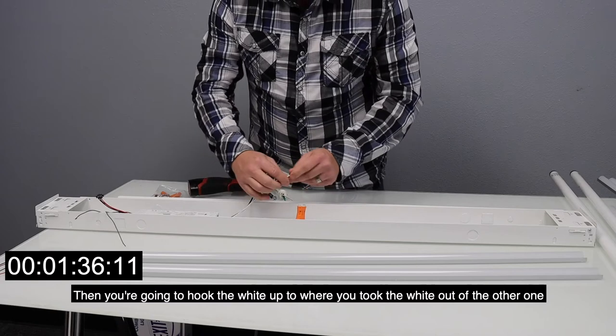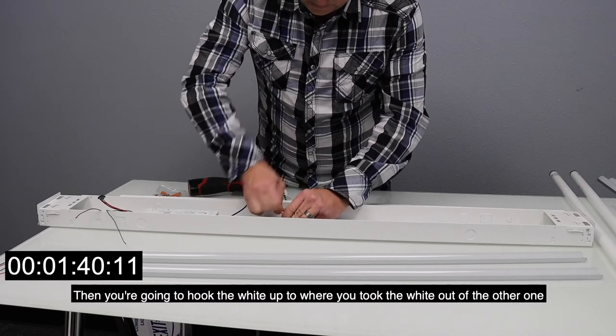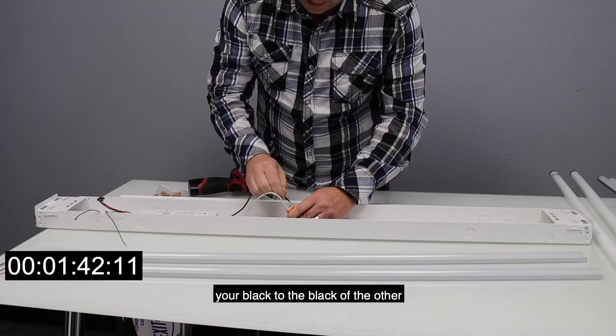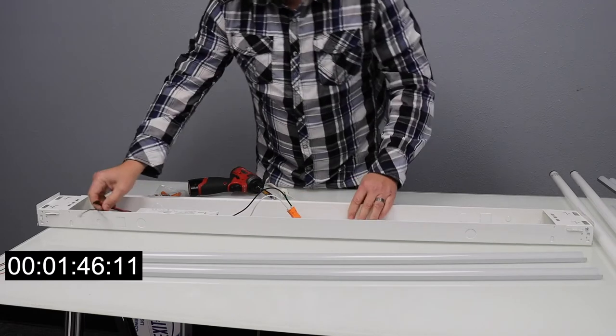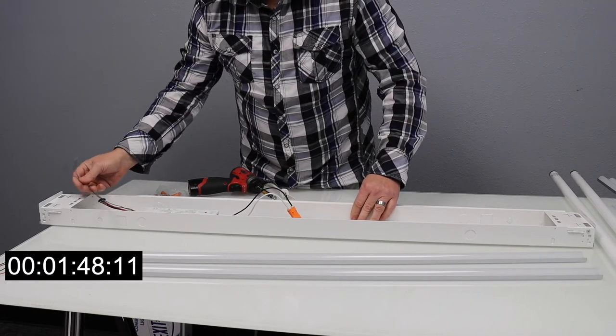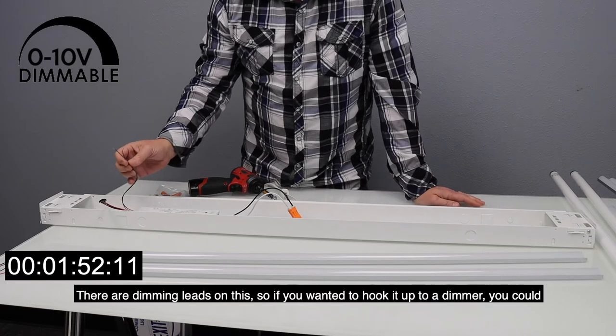Then you're going to hook your white up to where you took your white out of the other one. Your black to the black. And now you've got, you're ready to go. You've got dimming leads on this, so if you wanted to hook it up to a dimmer you could.